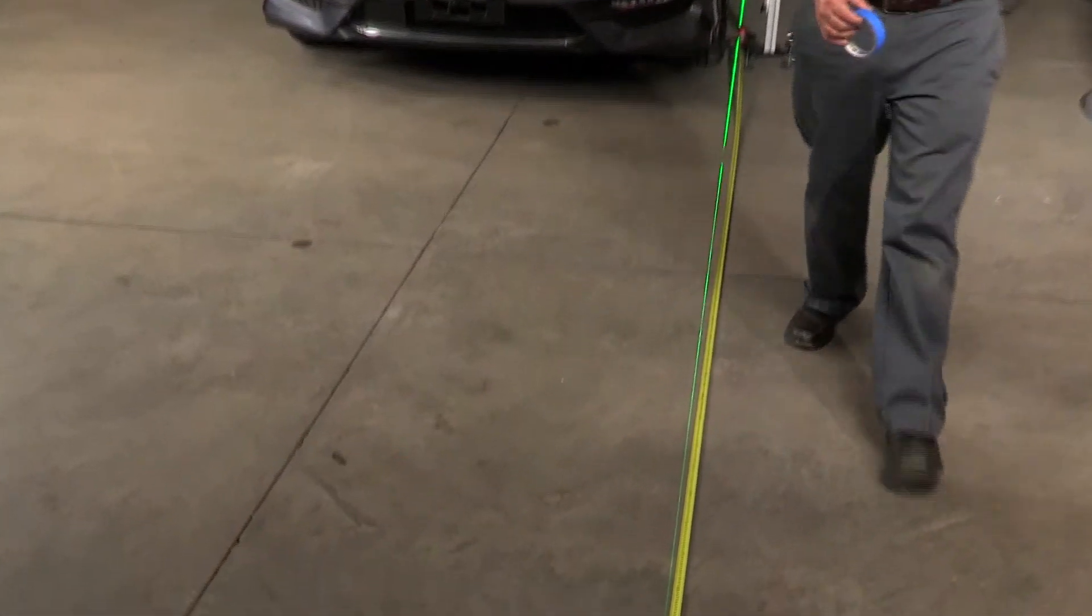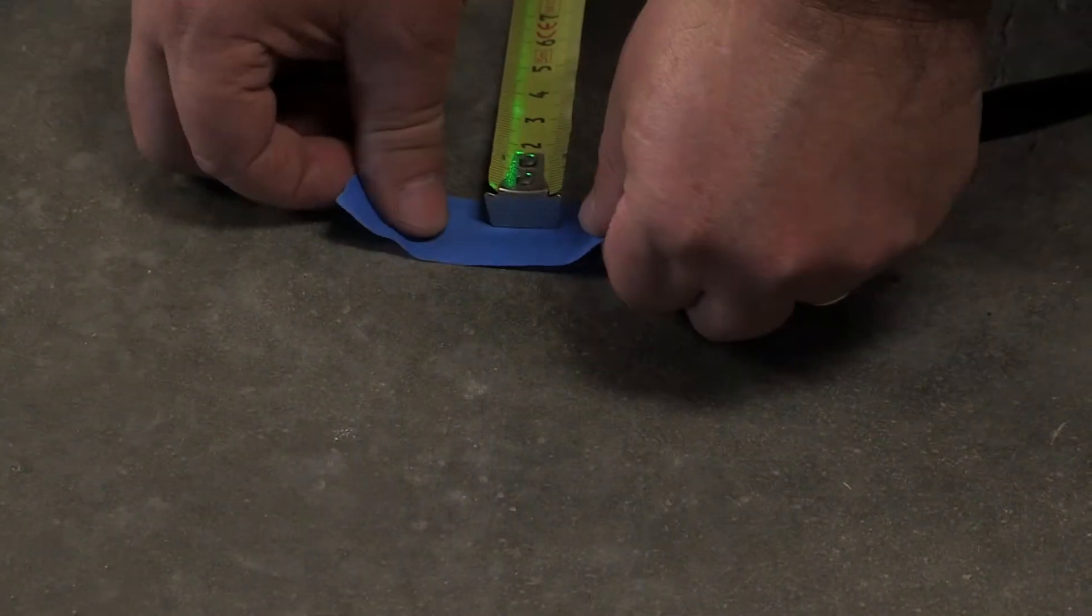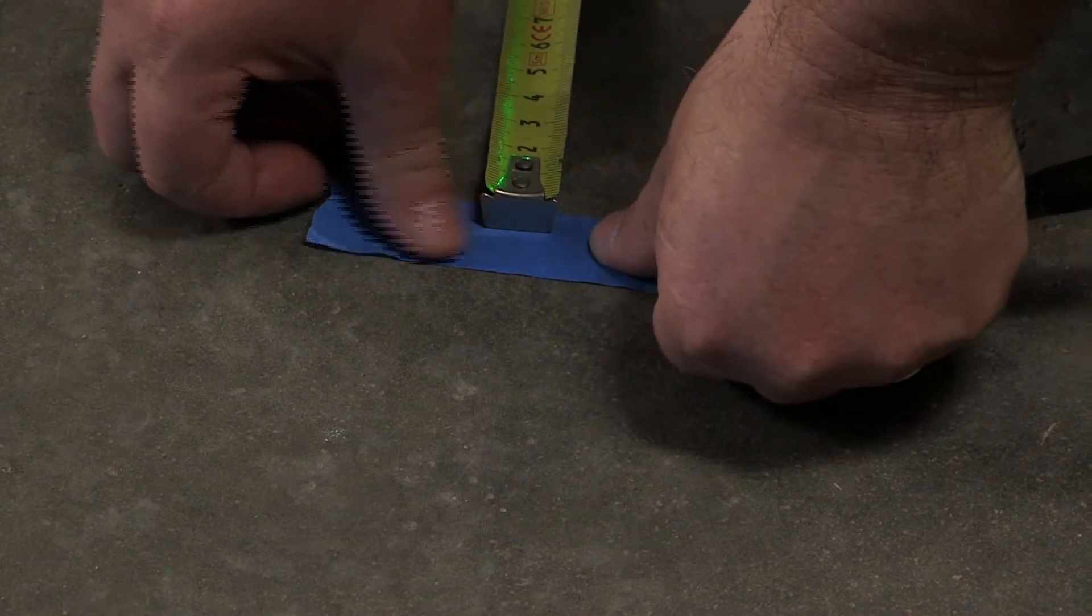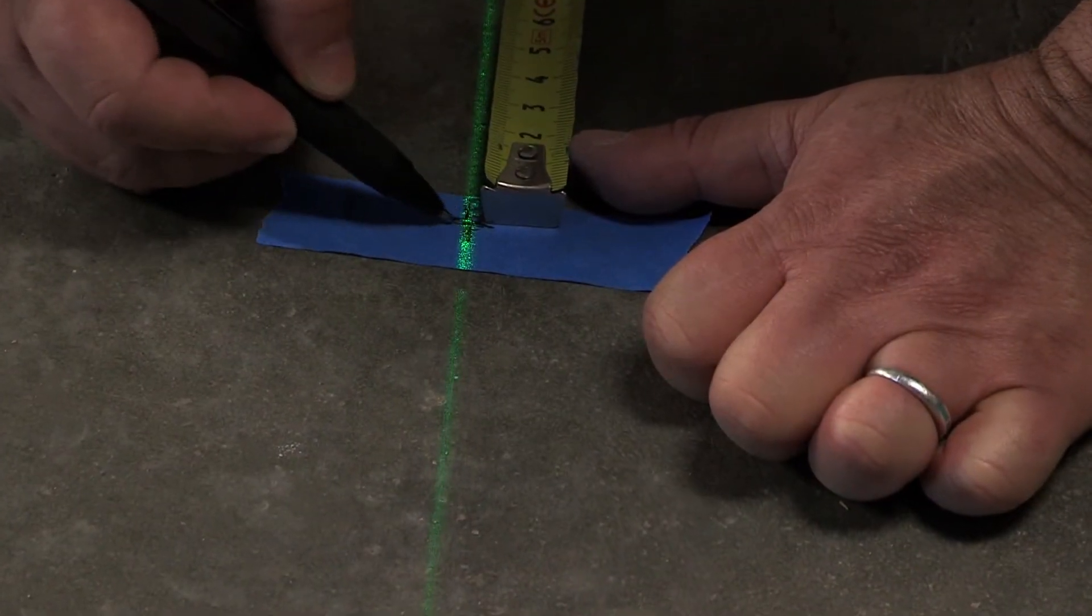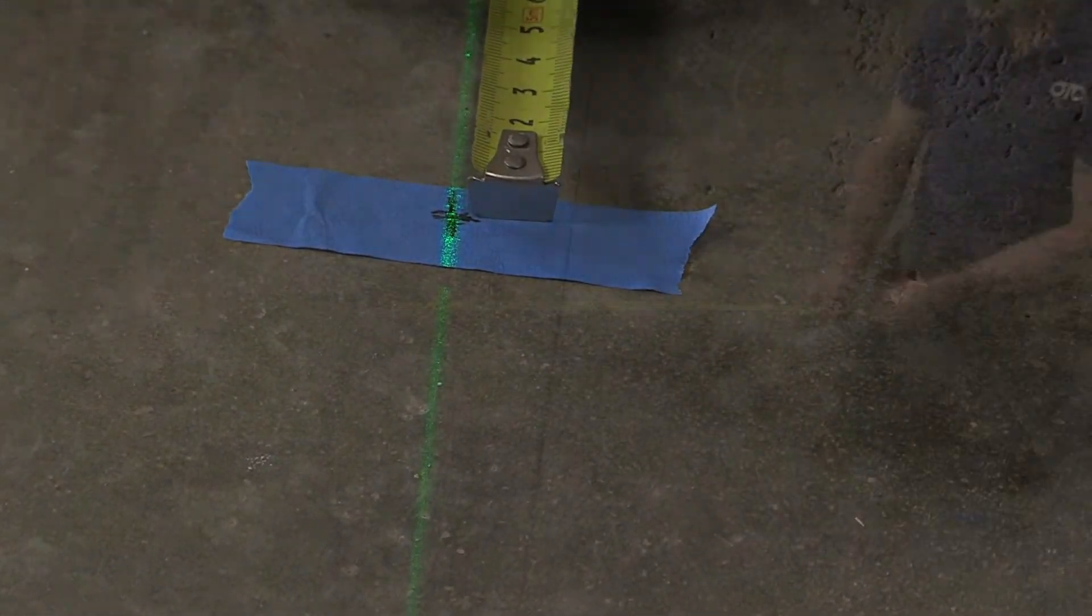Now that we have determined the distance of the target on one side of the vehicle, let us determine the distance of the target on the opposite side of the vehicle. To do that, we are going to complete the exact same steps we just did.